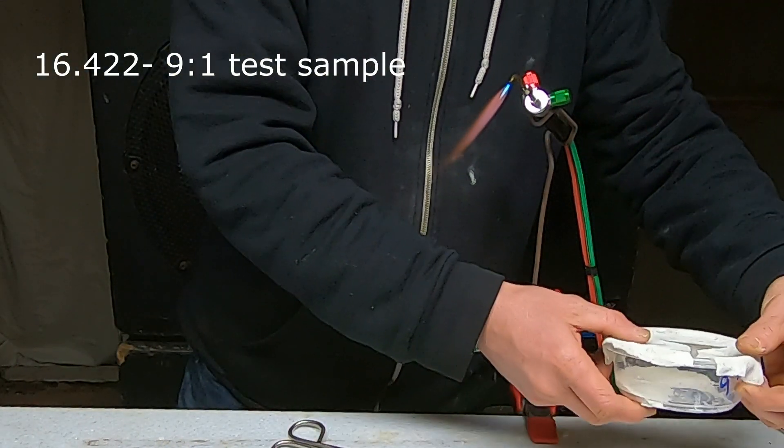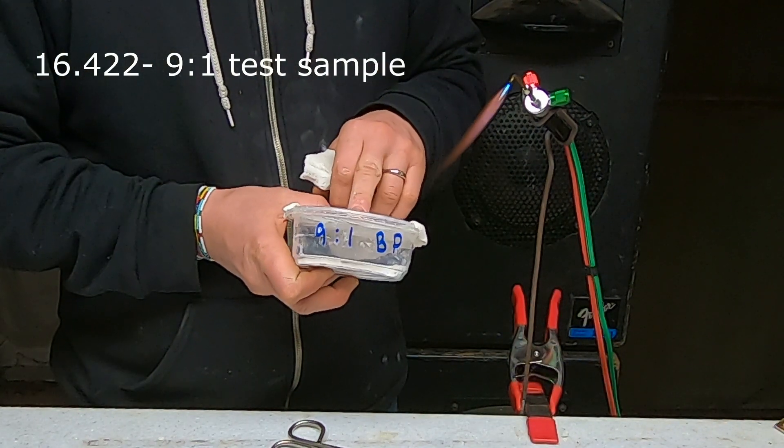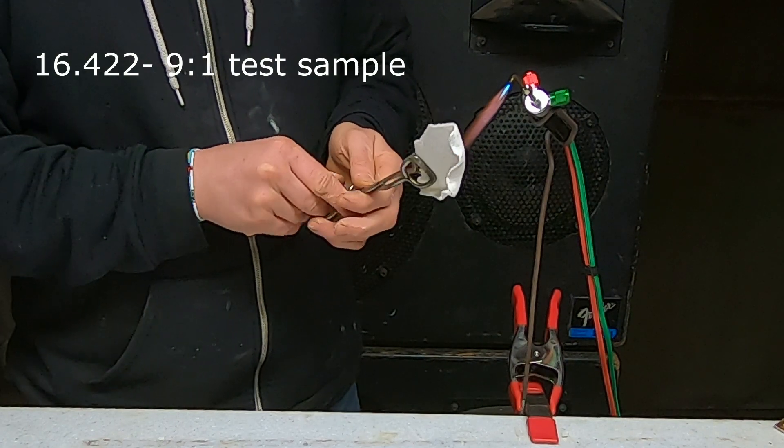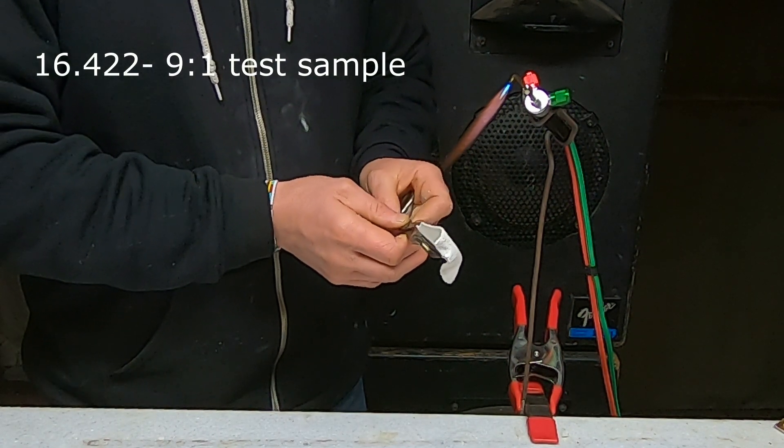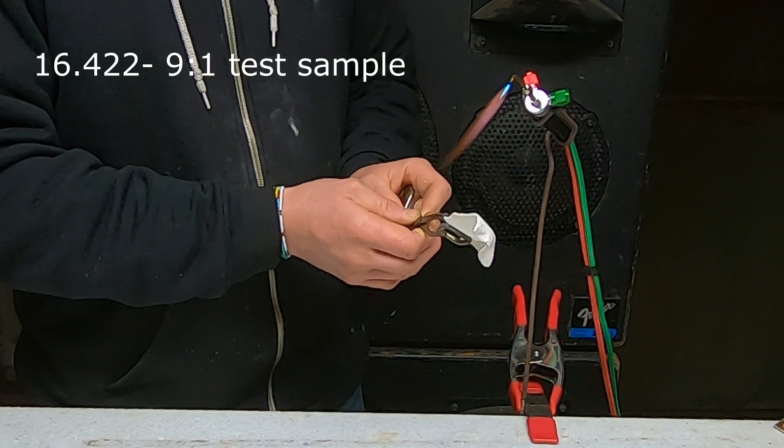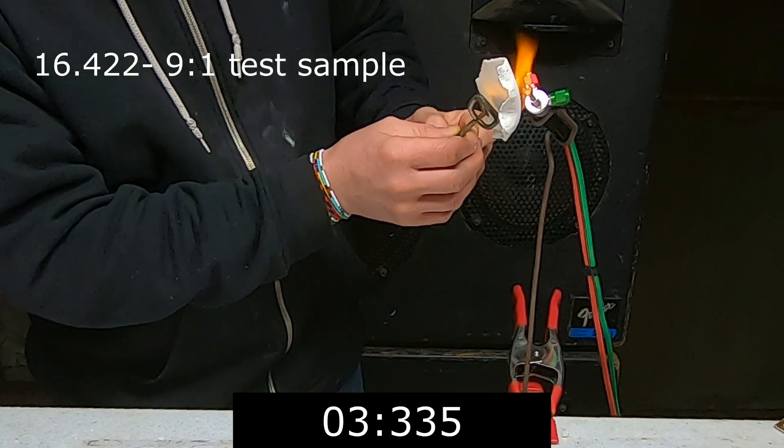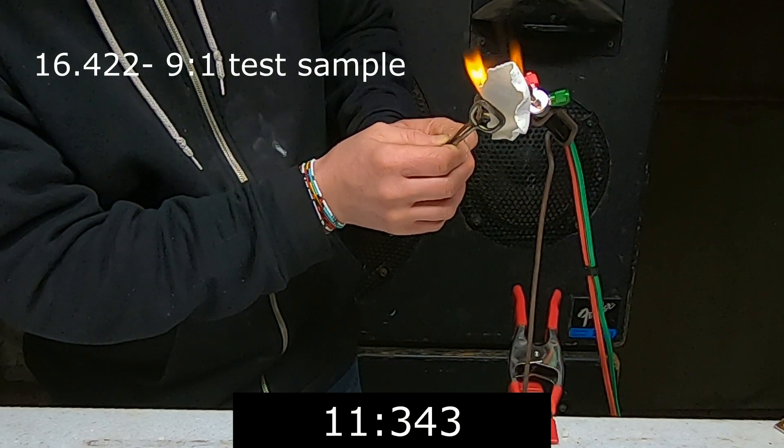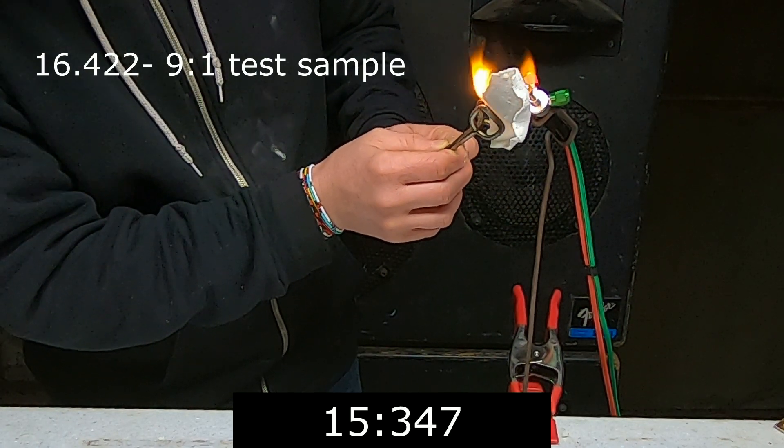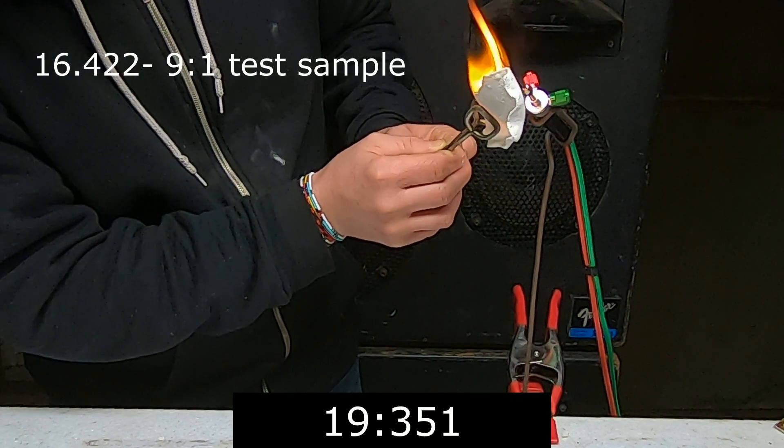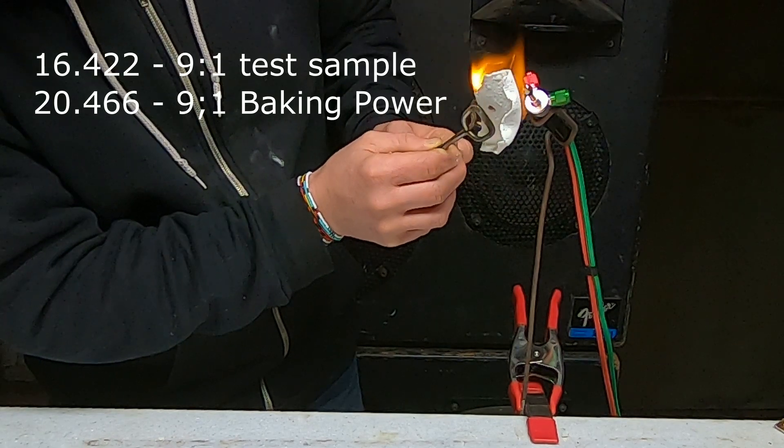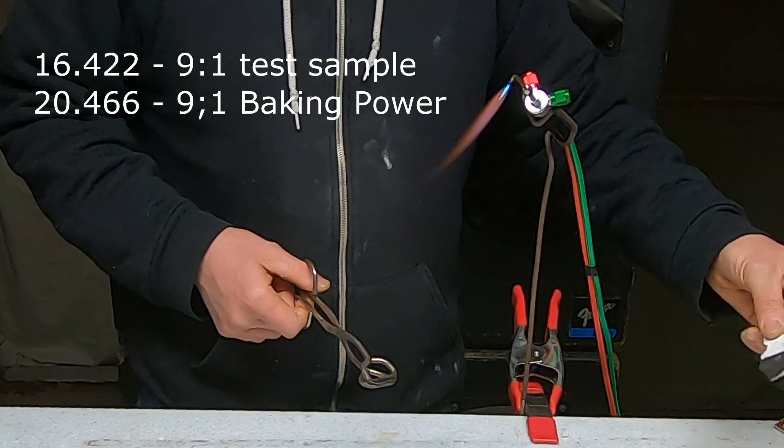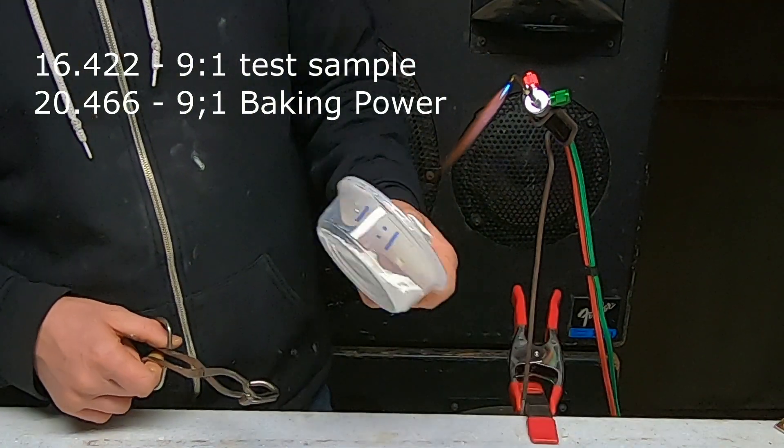So here we go, this is our baking powder 9:1. We're gonna start with what I believe is going to be the quickest burning through. Let's wait for a nice round number here. We've got burn through, that was 25 seconds-ish. So there's our baking powder.